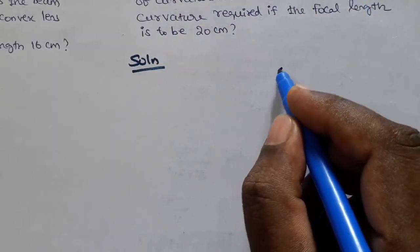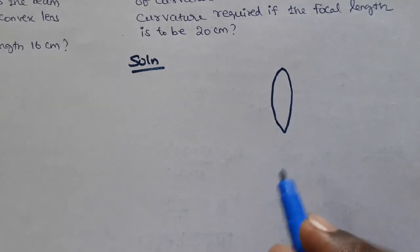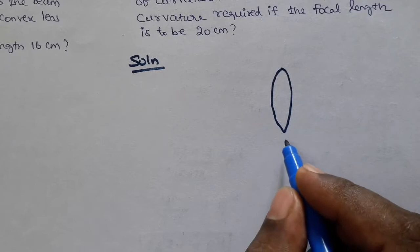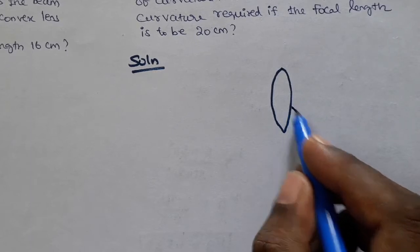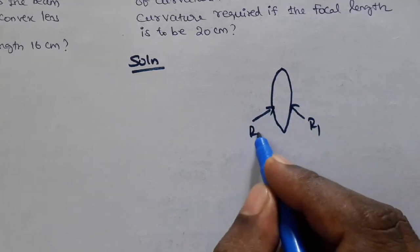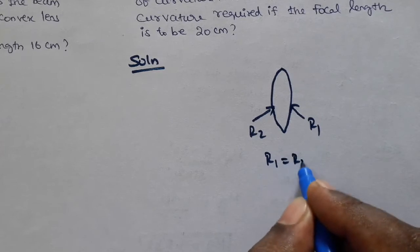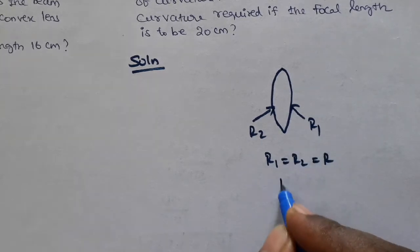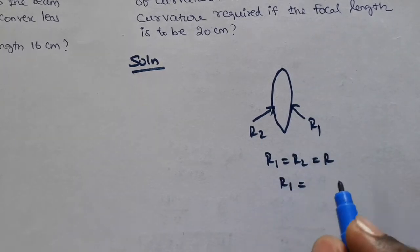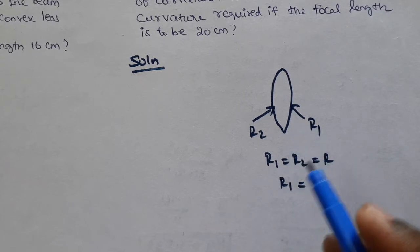Double convex lens means two spherical surfaces: one with radius of curvature R1, the other with radius of curvature R2. Given that R1 equals R2, we can write R1 = R2 = R.